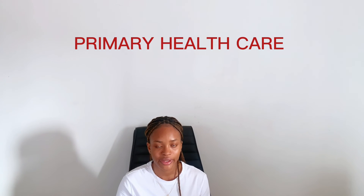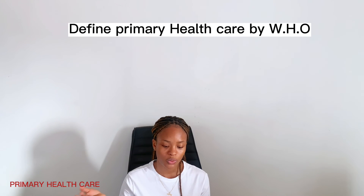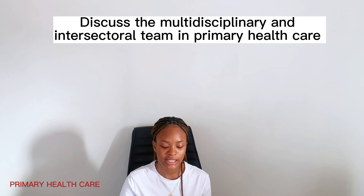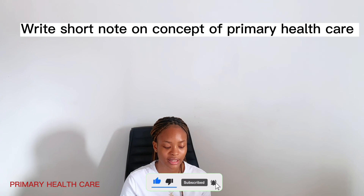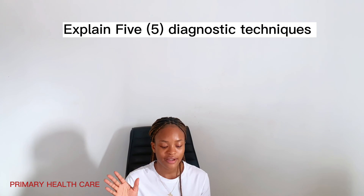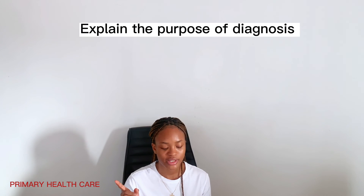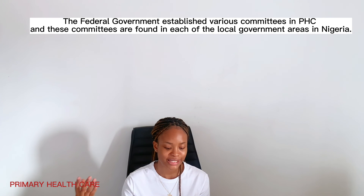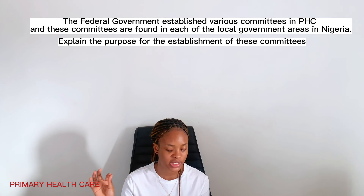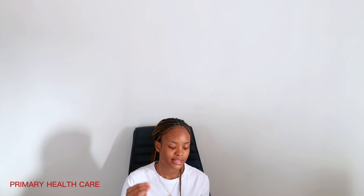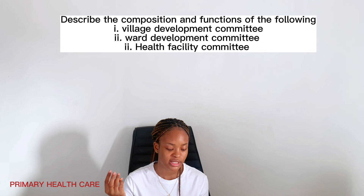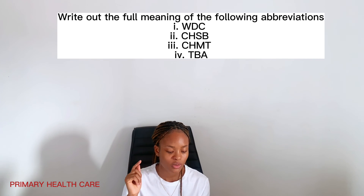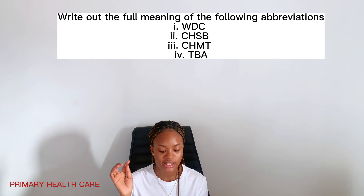The last one is primary healthcare. Question 1: define primary healthcare by WHO. B: discuss the multidisciplinary and intersectoral nature in primary healthcare. C: write short notes on concepts of primary healthcare. D: enumerate the components of primary healthcare. Question 2A: define diagnostic technique. B: explain five diagnostic techniques. C: explain the purpose of diagnosis. Question 3: the federal government established various committees in PHC found in each local government area in Nigeria. A: explain the purpose for the establishment of these committees. B: list six of these committees. C: describe the composition and functions of the unit development committee, ward development committee, and health facility committee. D: write out the full meaning of the following abbreviations — WTC, CHSB, CHT, and TBA.